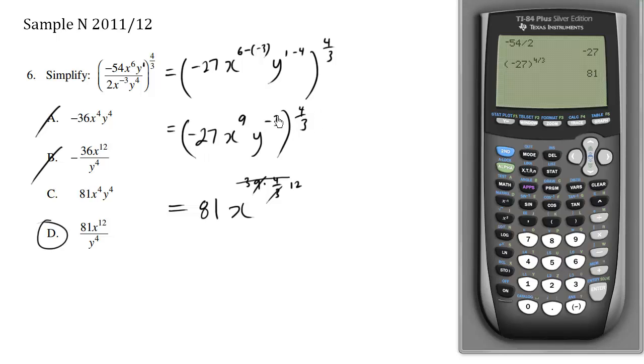So we're distributing this 4 thirds over here, here, and here. We're spreading the love. So now finally, we're working with the y's. We have y to the negative 3, exponent bracket exponent means we multiply these exponents, negative 3 times 4 thirds.